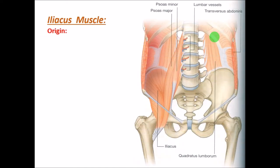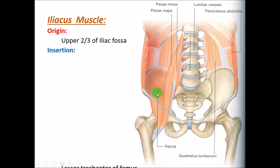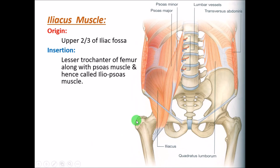The fourth muscle is the iliacus. This muscle has a large origin from the iliac fossa — the concavity on the iliac part of the hip bone. It takes origin from approximately two-thirds of the iliac fossa, and its insertion is together with the psoas major to the lesser trochanter of the femur. Together these two muscles are called the iliopsoas muscle.